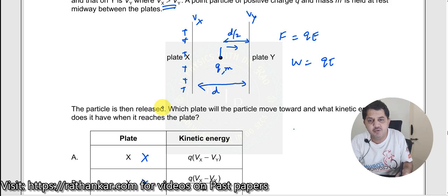Therefore, work done should be equal to QE into D by 2. Now, is there a factor of E coming into play here? No. How do I write E here? I should be writing E is equal to Vx minus Vy divided by D.